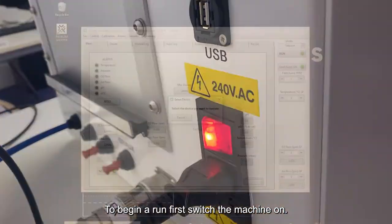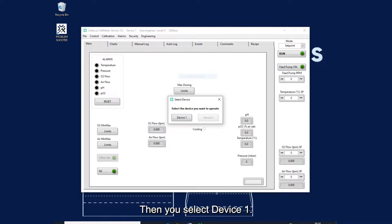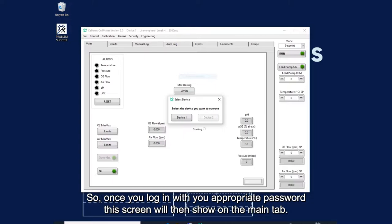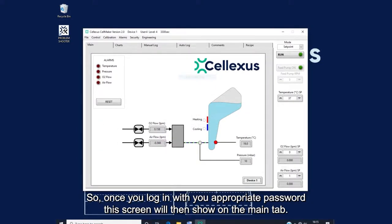To begin our run, first switch the machine on, then you select device 1. For device 2 options, it's for our dual controller, which can control two enclosures with the one controller. So once you log in with your appropriate password, this screen will then show in the main tab.